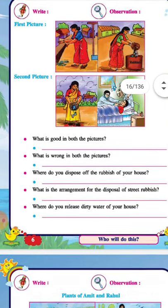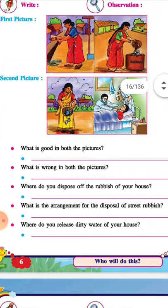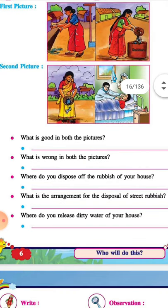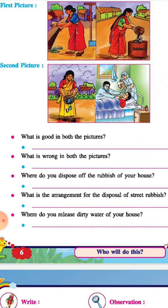First you have to observe this picture carefully. Two pictures are given. In the first picture, this lady is sweeping the garbage — she has collected the garbage and kept it on the road itself. In the second picture, that lady collected all the garbage and is throwing it in the dustbin. So out of these two pictures, the second lady is doing the right thing.